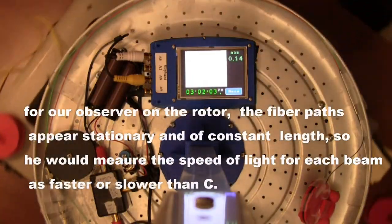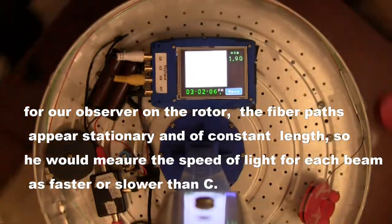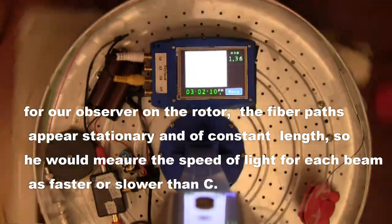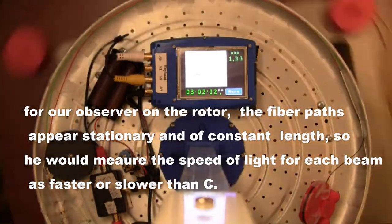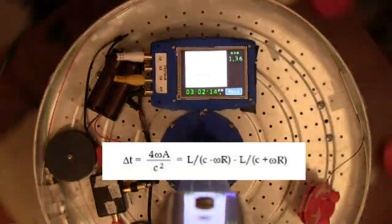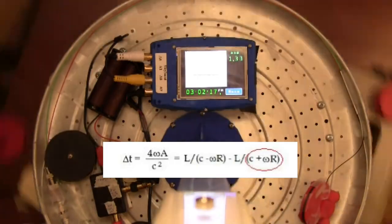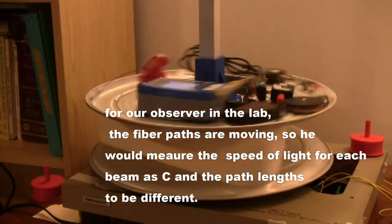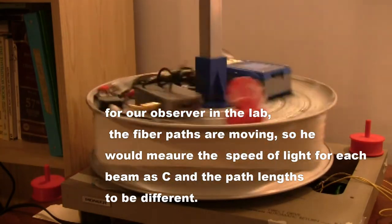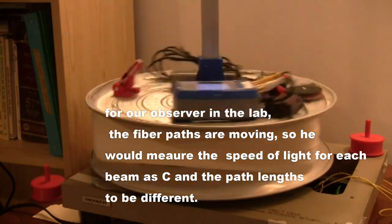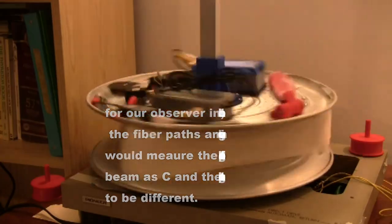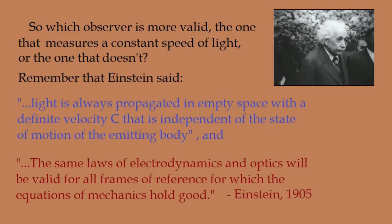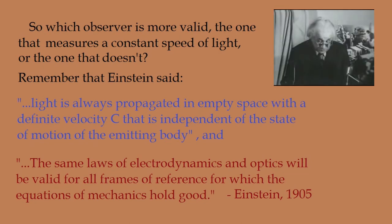For our observer on the rotor, the fiber paths appear stationary and of constant length, so he would measure the speed of light for each beam as faster or slower than C. For our observer in the lab, the fiber paths are moving, so he would measure the speed of light for each beam as C. So which observer is more valid, the one that measures a constant speed of light or the one that doesn't?